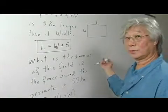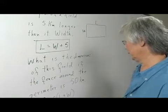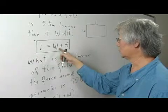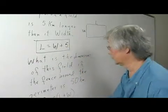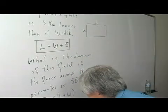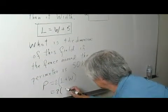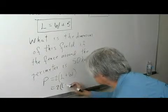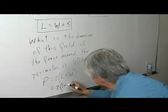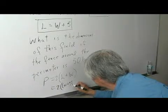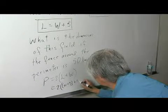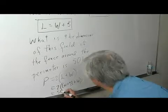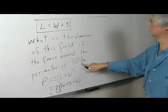Now we're going to solve this problem by using algebra. I'm going to substitute L equals W plus 5. So two times — I'm going to use a different set of parentheses — W plus 5 plus W equals 50, because that's what this statement says.